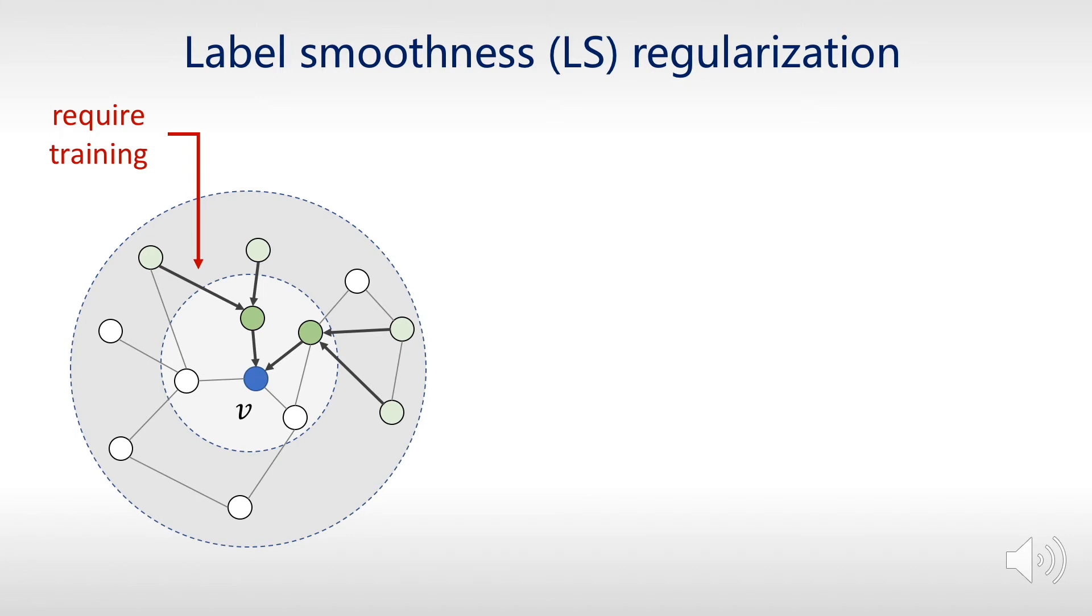Therefore, we propose taking label smoothness as additional regularization, which assumes that adjacent entities in the knowledge graph are likely to have the same labels.